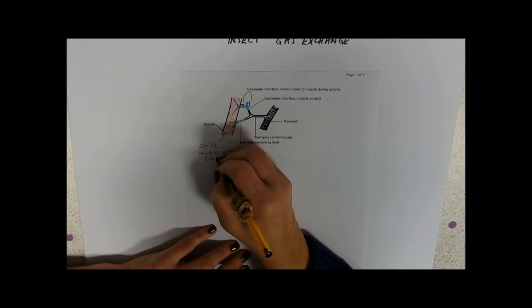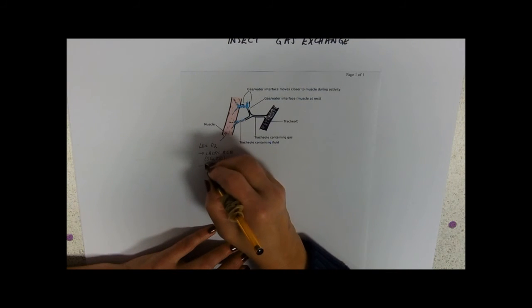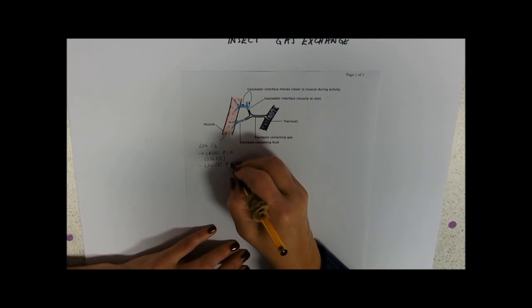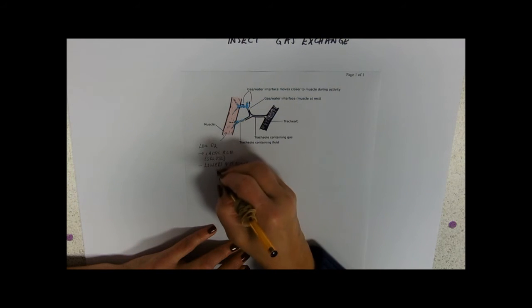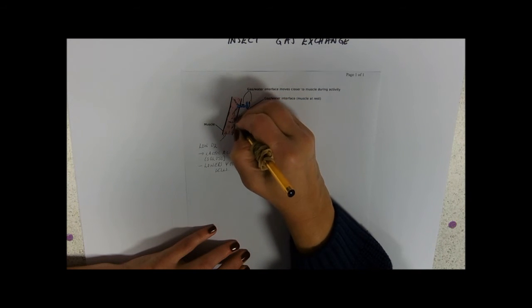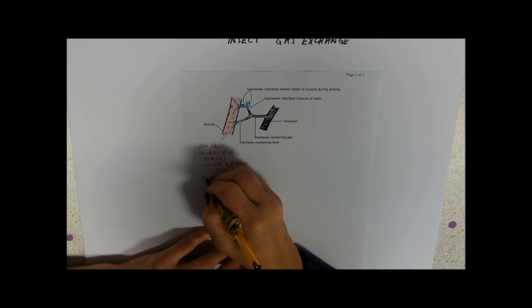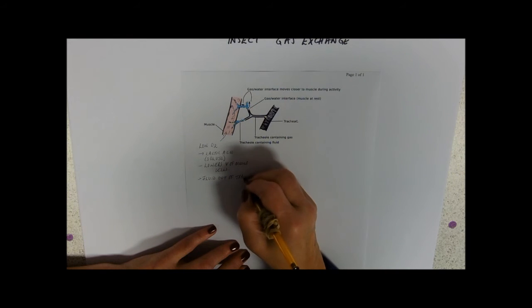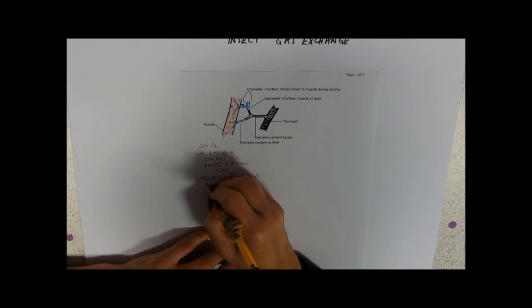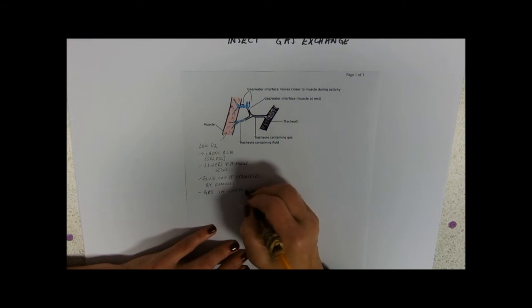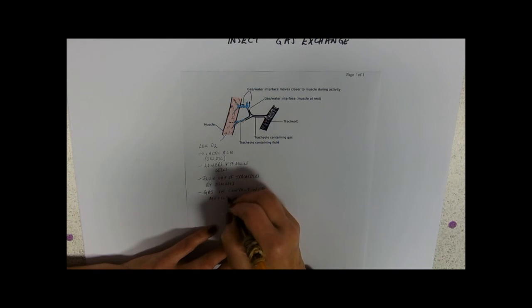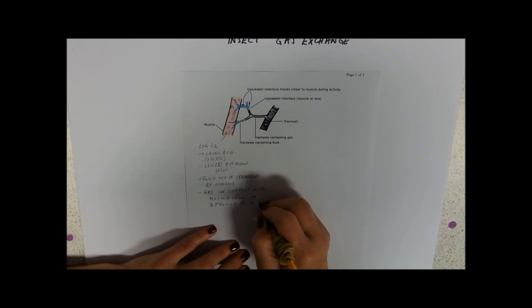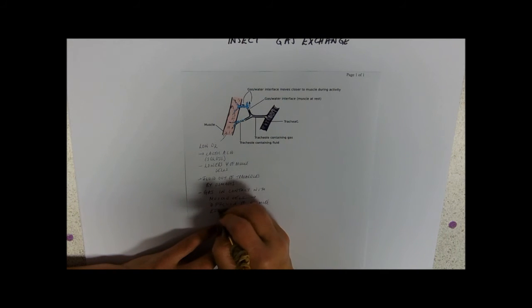This is a solute. What do we know about solutes? So this lowers the water potential in the muscle. So our fluid is going to move out into the muscle. So our fluid moves out of the tracheoles by osmosis. And that means that the gas is in contact with the muscle cell. And that will make the diffusion of oxygen more efficient because it's more efficient to diffuse oxygen through air than it is through fluid.